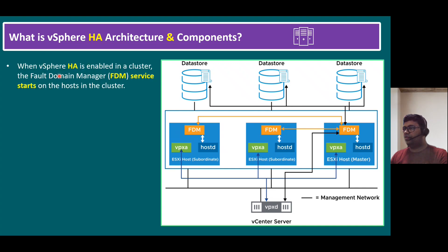When vSphere HA is enabled in a cluster, the Fault Domain Manager (FDM) service starts on all hosts. For easy understanding this diagram shows three hosts, but vSphere 7 supports up to 94 ESXi hosts per cluster — compared to 64 in version 6.x. When HA is enabled, all cluster hosts start with the FDM service. Additionally, the vSphere HA cluster is managed by a master host.